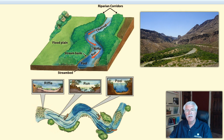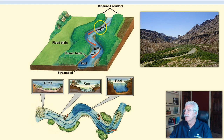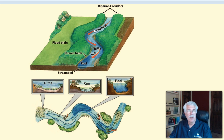In a straight stretch of stream, the main force of the current is in the middle. The deepest water is also usually in the middle. The part near the shore is usually the shallowest.